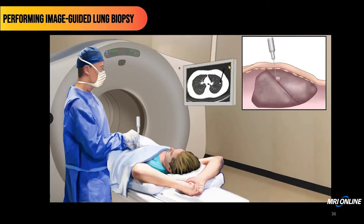The screen the interventionalist is using serves as a guide for performing the biopsy. In this particular case, he sees his needle through the lung into the lesion of interest. A schematic identifies what this looks like anatomically — traversing the skin, the soft tissues, through the intercostal muscles and into the biopsy target. The interventionalist would have reviewed the scan, identified where the fissure was, and noted that the lesion is sitting on top of the fissure. He is ensuring that his throw, his pass, is not crossing the fissure.